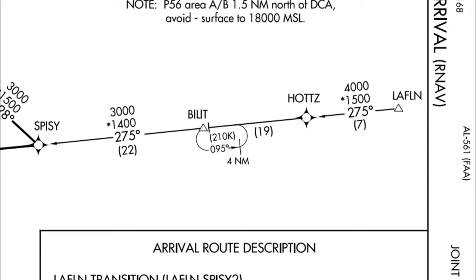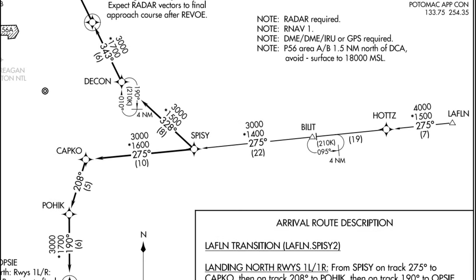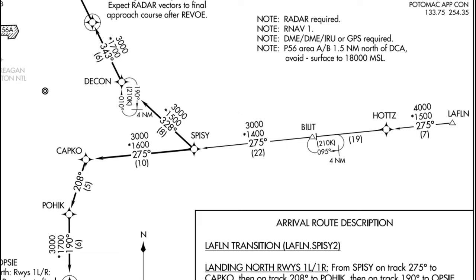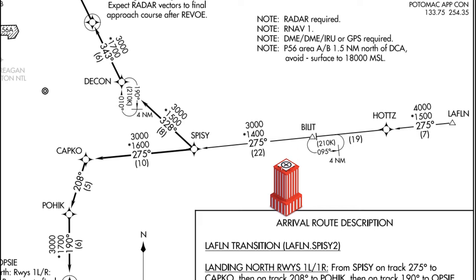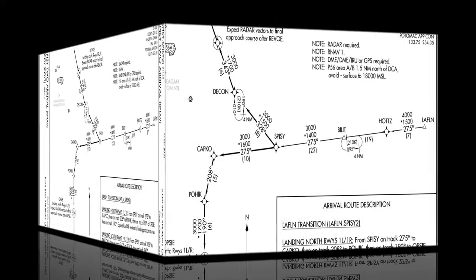Between Billet and Sipsy we have more information: 3,000 feet is our lowest safe altitude, ground obstructions can be expected at 1,400 feet, our heading remains 275 degrees, and this is a 22-nautical-mile leg between Billet and Sipsy.